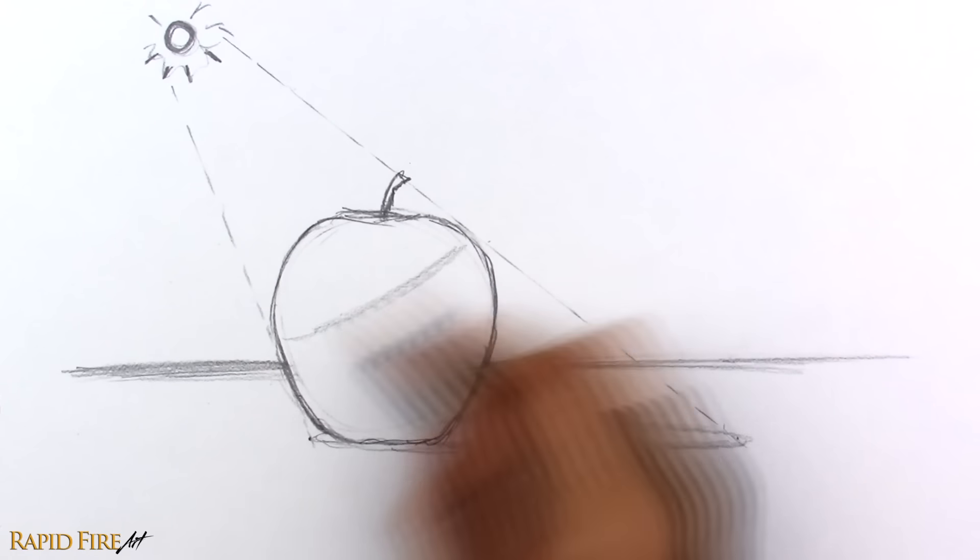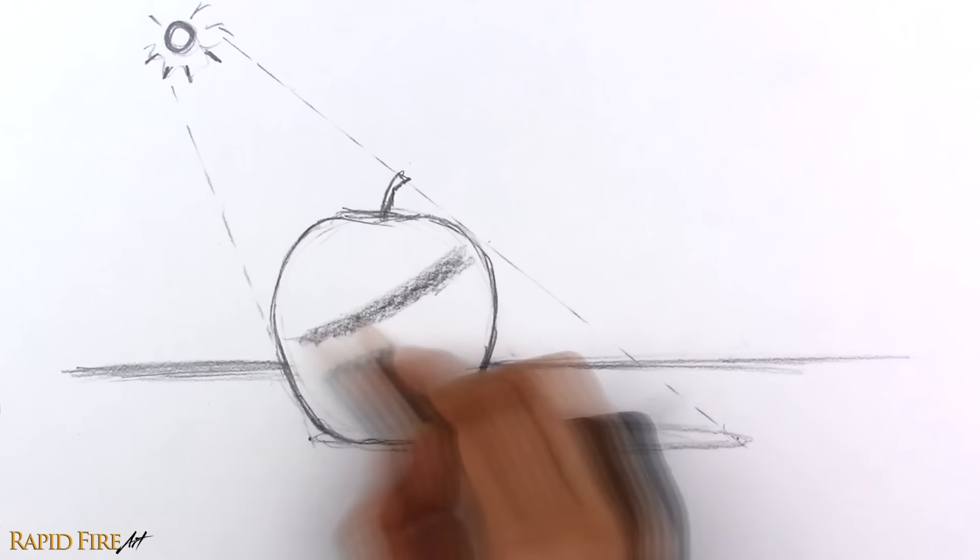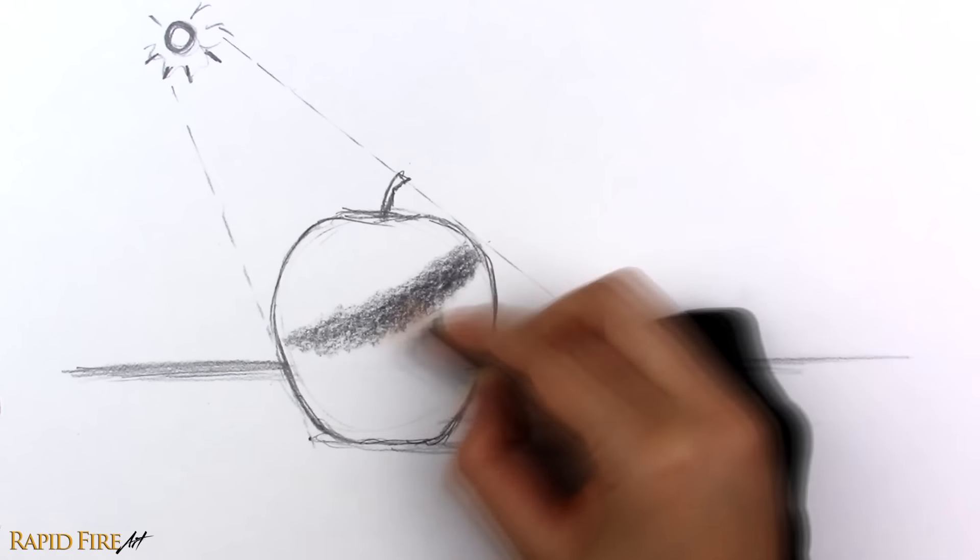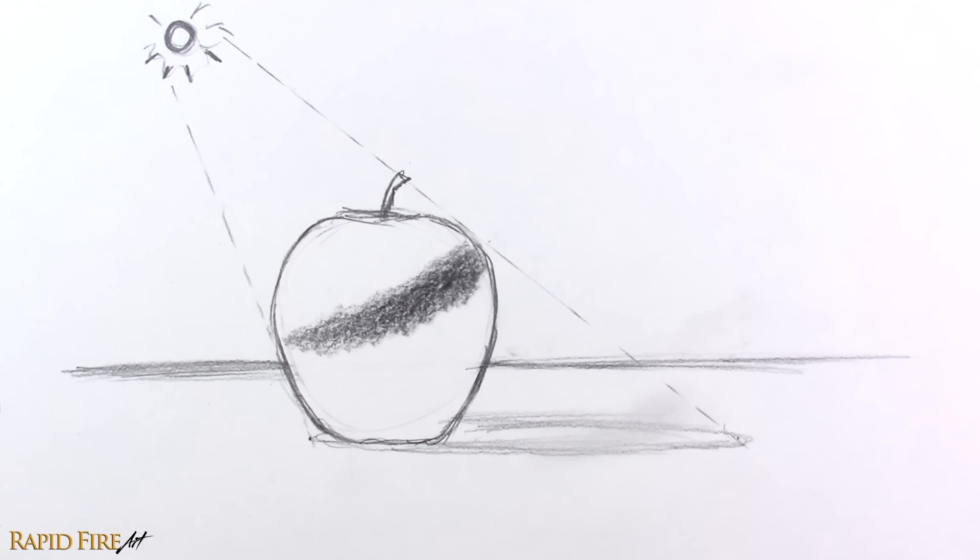Draw a core shadow, making sure the thickest section is the darkest. Where the apple touches the table, there's less light, so let's shade that area darker.